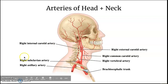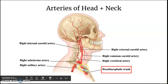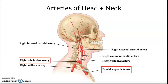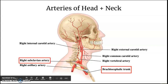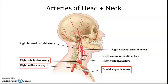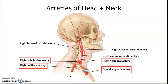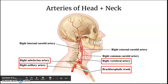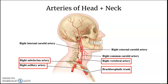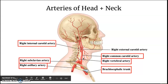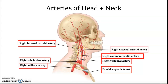Now we have the arteries of the head and neck. Starting with the brachiocephalic trunk, which comes right from the ascending aorta, it branches into the right subclavian artery and the right common carotid artery. The right subclavian artery then turns into the right axillary artery as it passes the axillary region, which is your armpit. It's important to note that the right vertebral artery goes into the foramen of the vertebra on the right side. The right common carotid branches into the internal and external carotid arteries — 'common' typically denotes an artery that will branch into internal and external.